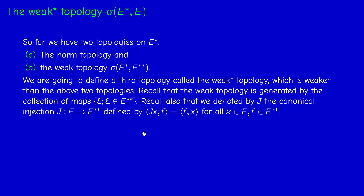We know there is an injection J: E → E** given by the formula J(x)(f) = f(x). We said that J need not be surjective; if it is surjective we say that E is reflexive, meaning every ξ in E** must be of the form J(x). In general, the collection of maps J(x) as x varies in E is a subcollection of the collection of all ξ in E**.